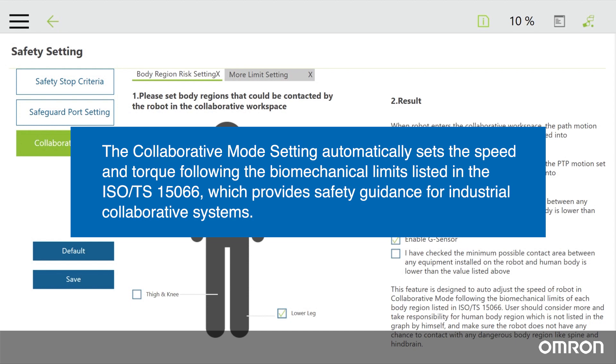The collaborative mode setting automatically sets the speed and torque following the biomechanical limits listed in the ISO technical specification 15066, which provides safety guidance for industrial collaborative systems. It is a very convenient tool.